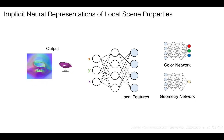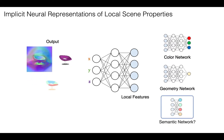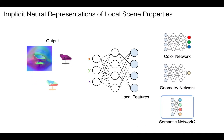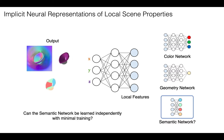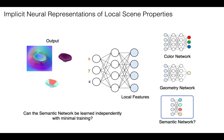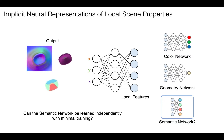In this work, we reason that these features may also contain semantic information about an object's parts. Instead of retraining the full SRNs architecture, we want to learn a segmentation mapping on the pre-trained features with minimal supervision.